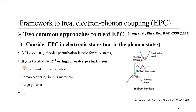The most well-known effect is the so-called indirect bandgap transition, which is a result of second-order perturbation. And from higher-order perturbation, you can get Raman scattering, but also the large polaron effect.